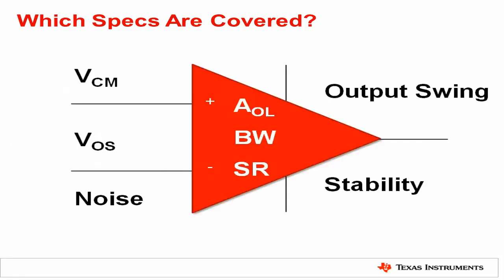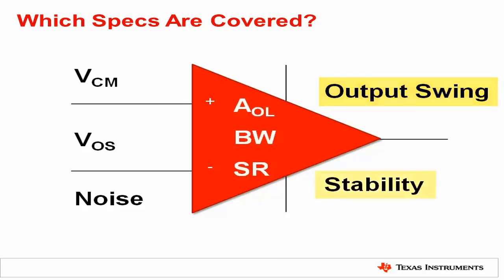The training courses dive into all the technical details of many key product specs. In an op amp, for example, these specs include input common mode or VCM, input offset voltage or VOS, intrinsic noise, open loop gain or AOL, bandwidth, slew rate, output swing, and stability.